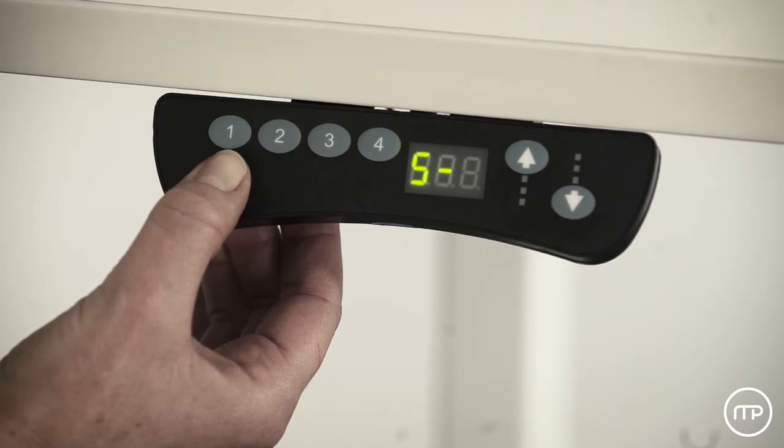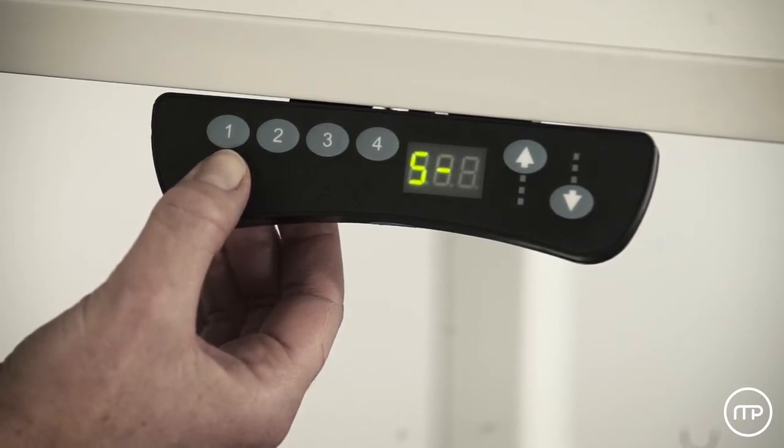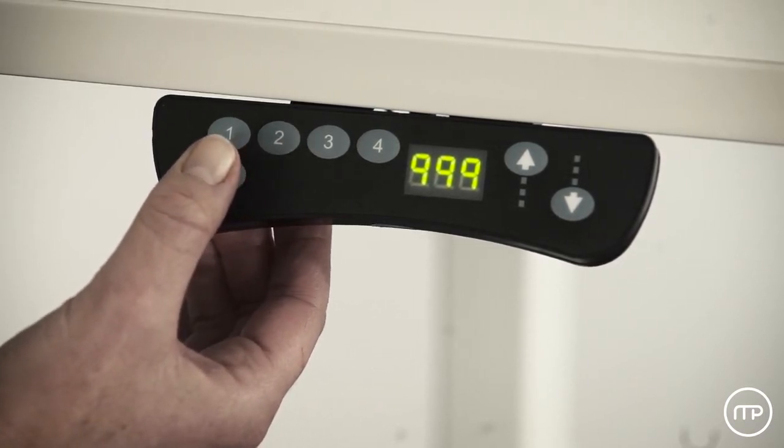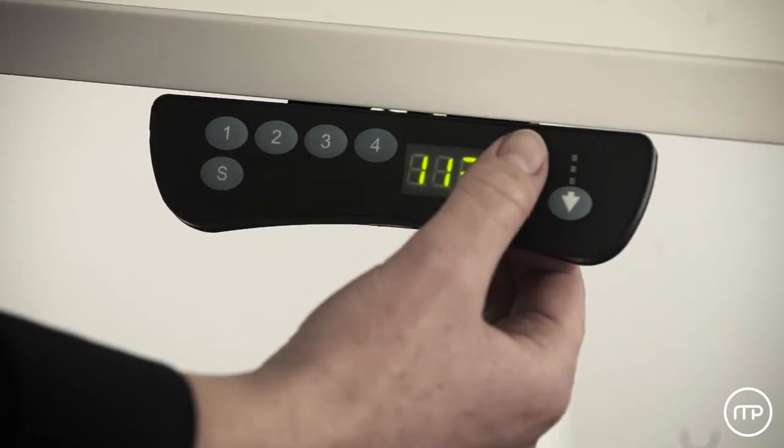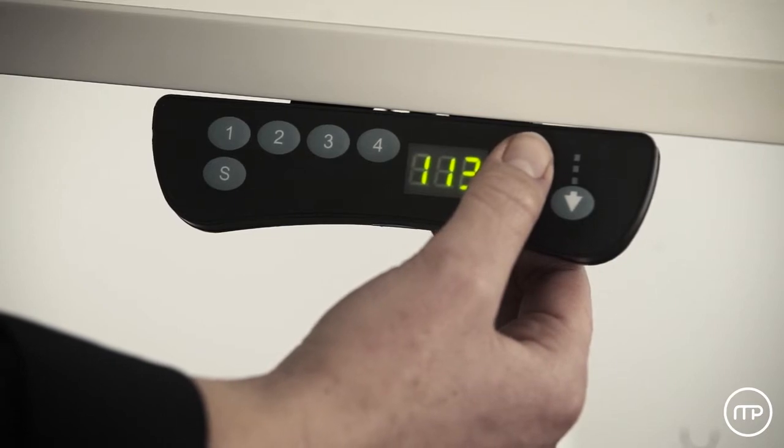Then press the S button two times in quick succession. The LCD display will briefly change to 999 before returning to the selected height. The worktop will no longer be able to be adjusted above this point.